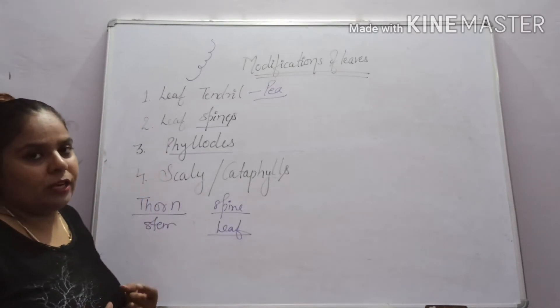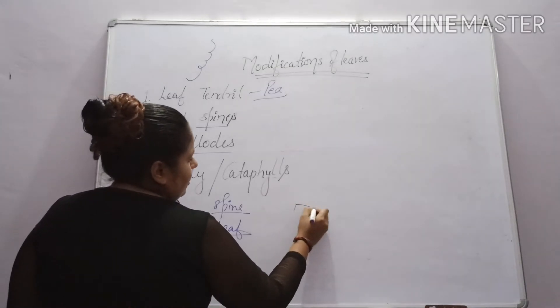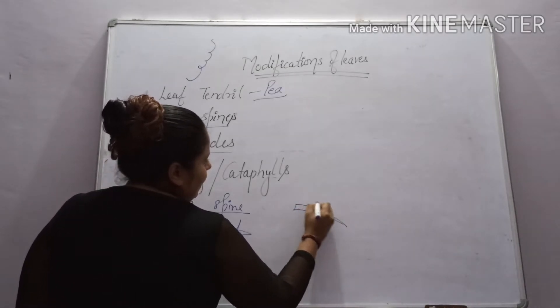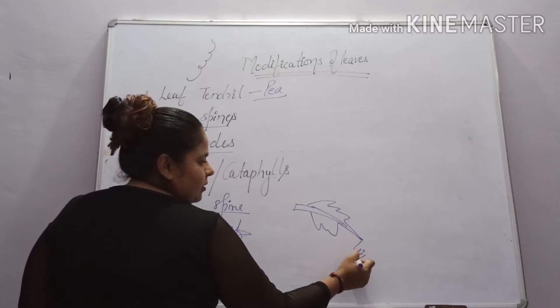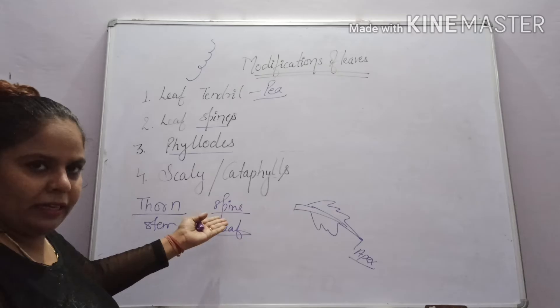But here the spine, which is from the leaf, is a bit complex. A simple leaf. Suppose this is the leaf. If it is, I can say, it has to be changed into spine, like in yucca plant.